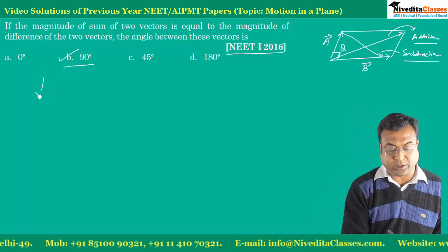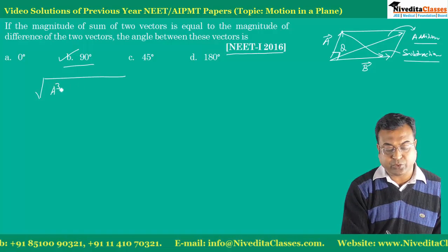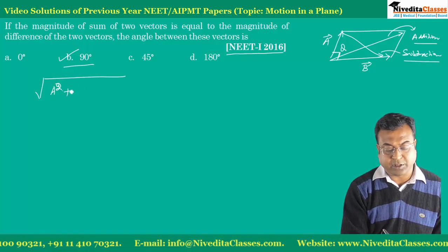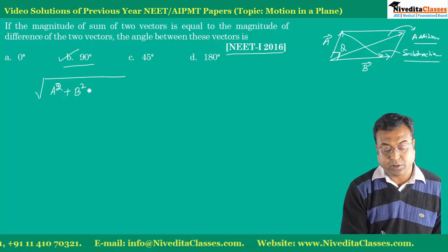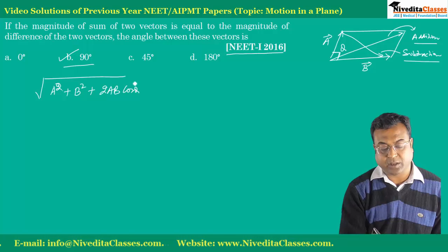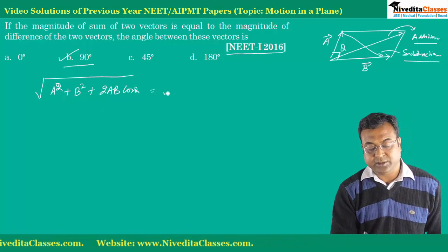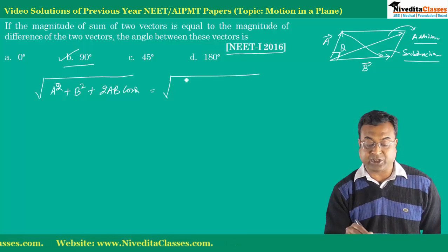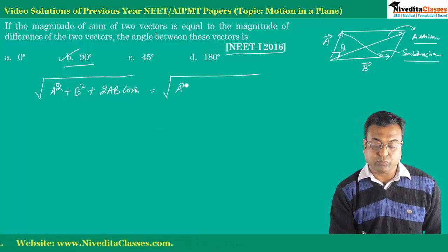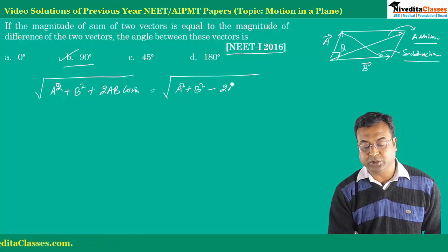The resultant of addition is given by: square root of A squared plus B squared plus 2AB cosθ. The resultant of subtraction is given by: square root of A squared plus B squared minus 2AB cosθ.